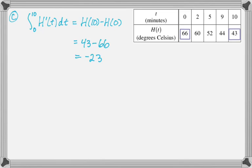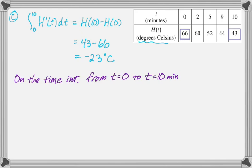And then we need to interpret this in the context of the problem. So I'm going to say, oh, it's in degrees Celsius. I think I already said that. But on the time interval from t equals 0 to t equals 10 minutes.